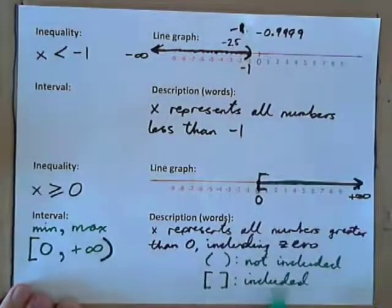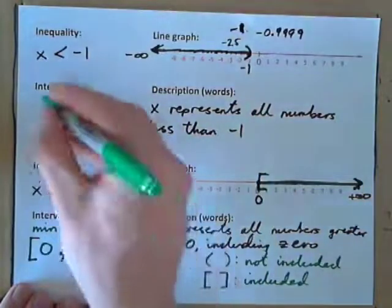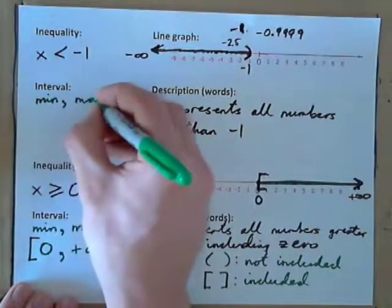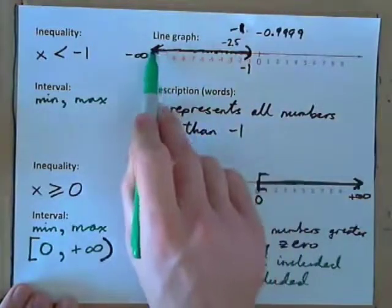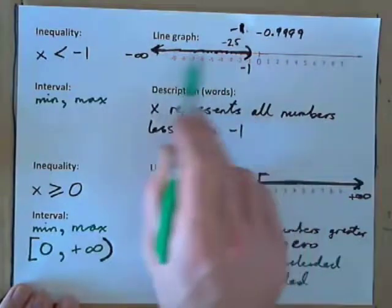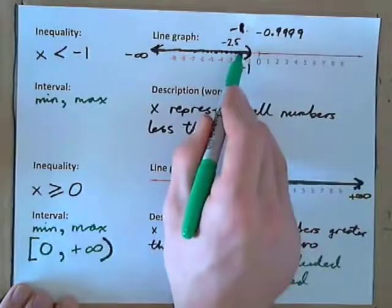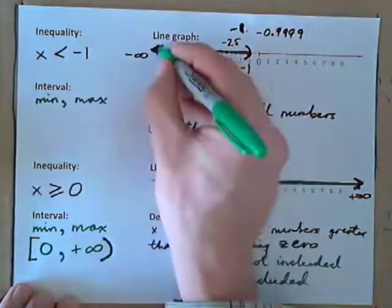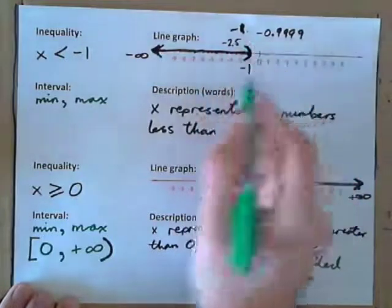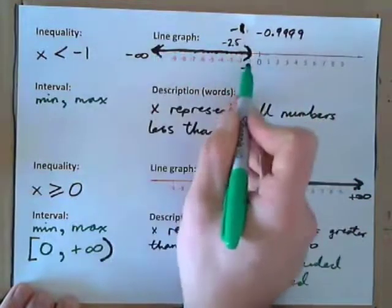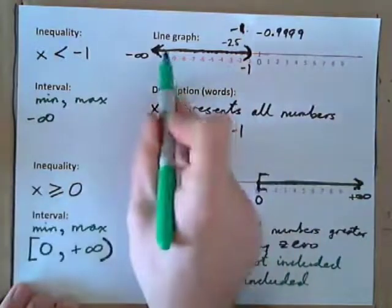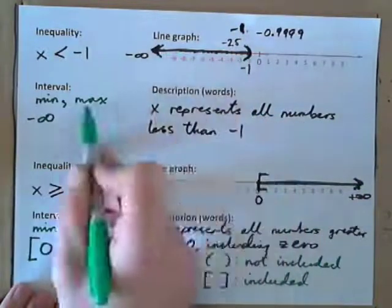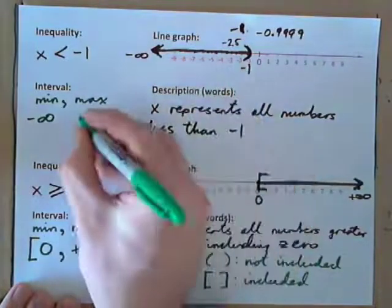So again, square bracket means included, parenthesis means not included. Let's do an interval for these ones. An interval is always written min, comma, max. Look at the line graph: we have this set of numbers from negative infinity to negative 1, and all the numbers in between. Write down: what's the minimum number in this set? The minimum is actually negative infinity. What's the maximum in this set? The maximum number is actually negative 1.